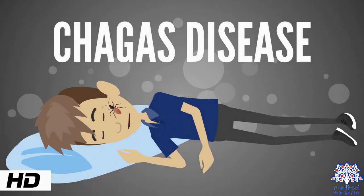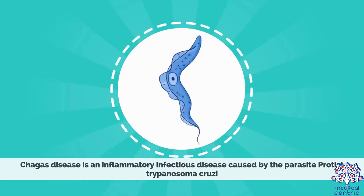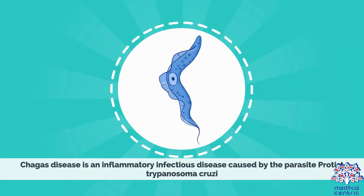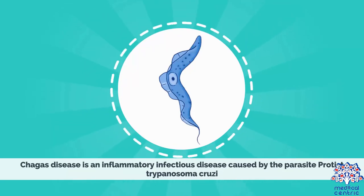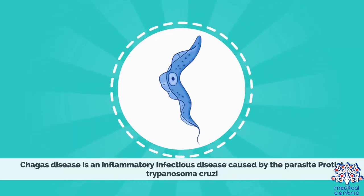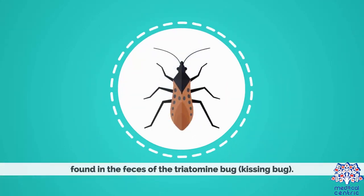Today's topic is Chagas disease. Chagas disease is an inflammatory infectious disease caused by the parasite protist, Trypanosoma cruzi, found in the feces of the triatomine bug, or kissing bug.